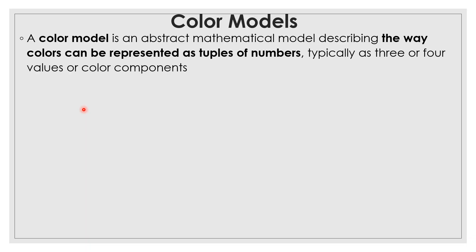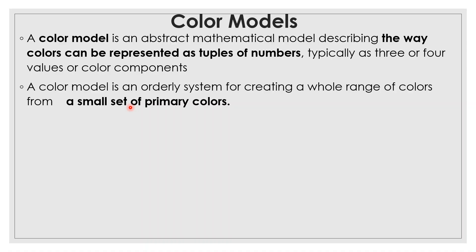Next topic: color models. A color model is an abstract mathematical model describing the way colors can be represented as tuples of numbers, typically as three or four values or color components. A color model is an orderly system for creating a whole range of colors from a small set of primary colors.